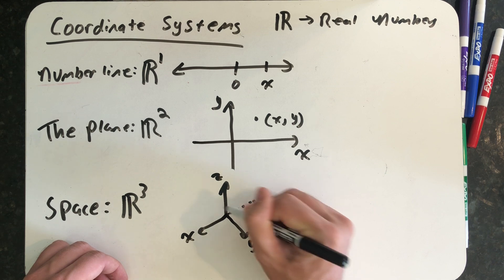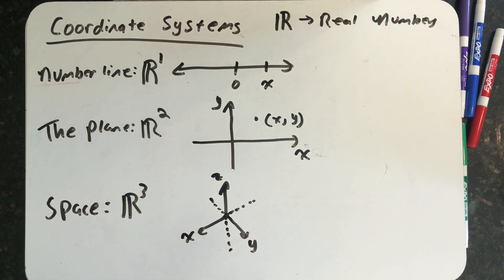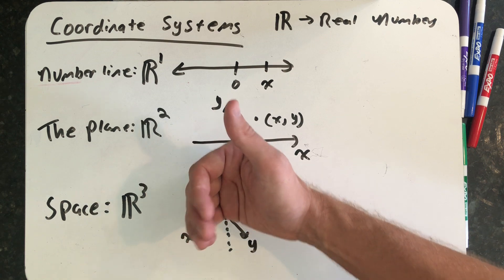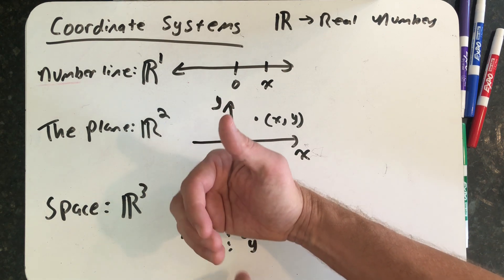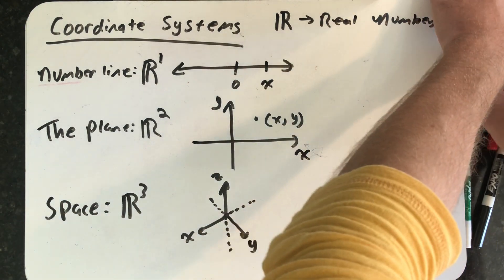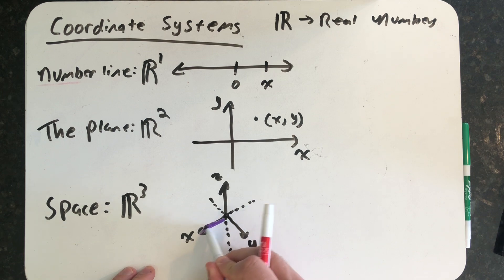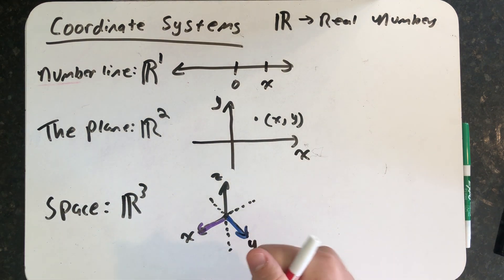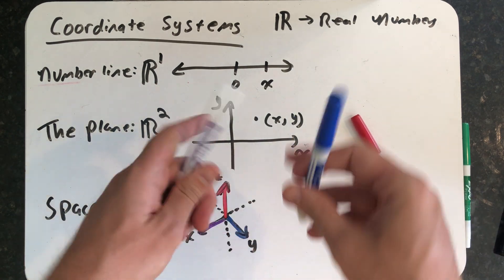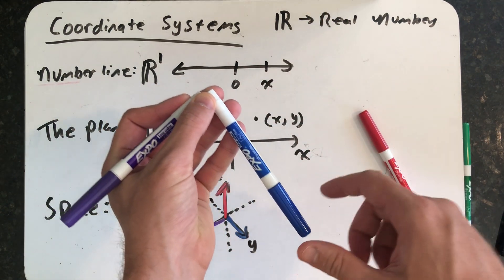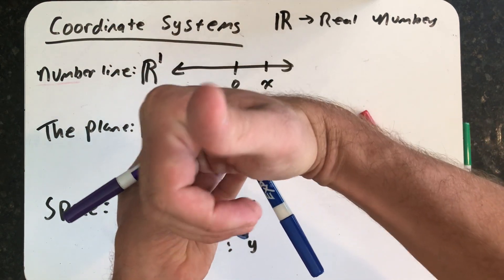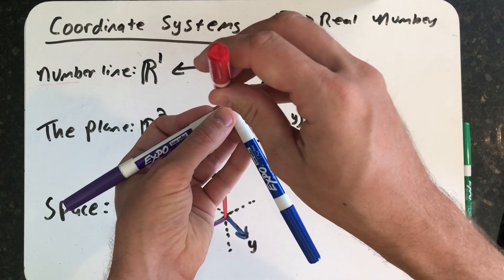In this class, we will always use what we call a right-handed coordinate system to describe space. I have an x-axis, a y-axis, and a z-axis. If I was to grab the z-axis with my hand — placing my thumb pointing upwards on the z-axis and curling my fingers around it — my fingers would curl from x to y. So let the x-axis be represented by this purple marker, the y-axis by this blue marker, and the z-axis by this red marker. I can hold the x and y axes exactly as drawn.